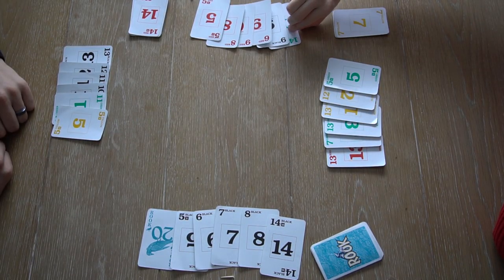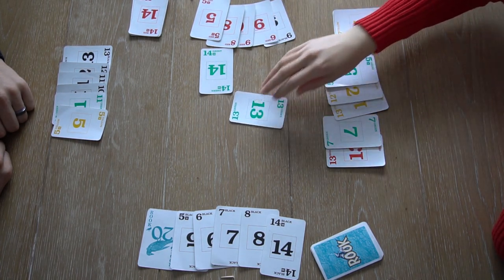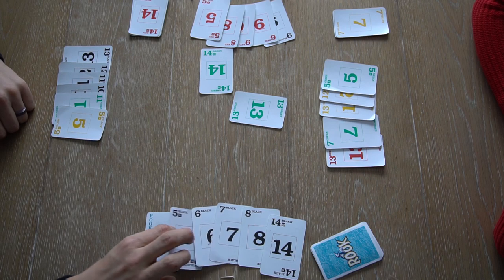In this next trick, player 3 leads with a green 14. But since player 4 has no greens, he plays a trump color card and wins that trick.